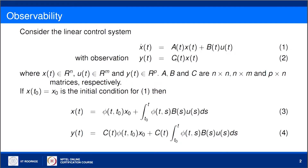Let us consider a control system dx/dt = A(t)x(t) + B(t)u(t), and the observation or measurement of the system is y(t) = C·x(t). Here the matrix A is an n×n matrix, B is n×n, and C is a p×n matrix, and the state of the system x belongs to Rn. That means x1, x2, ..., xn are the states of the system and y1, y2, ..., yp are the observations.